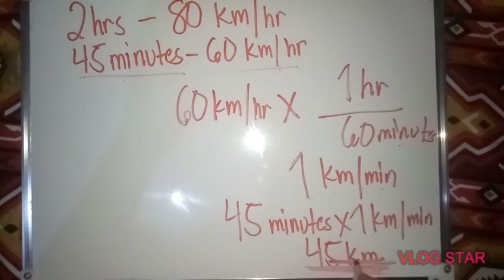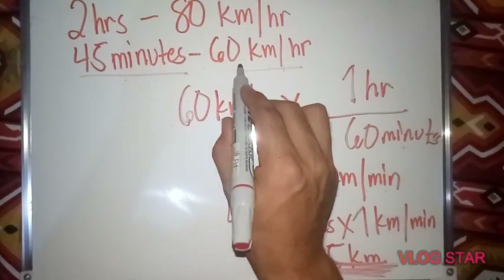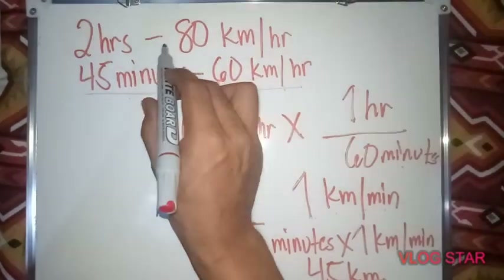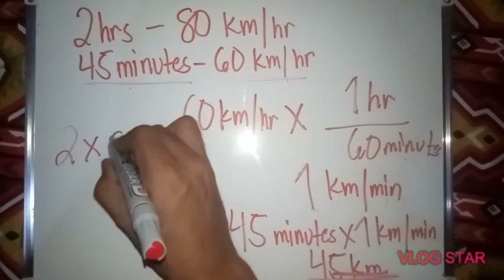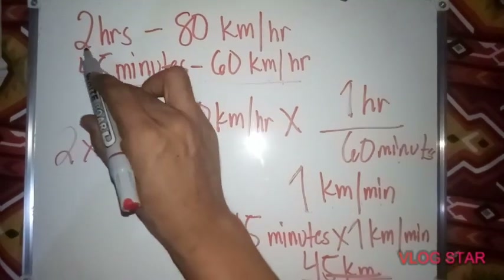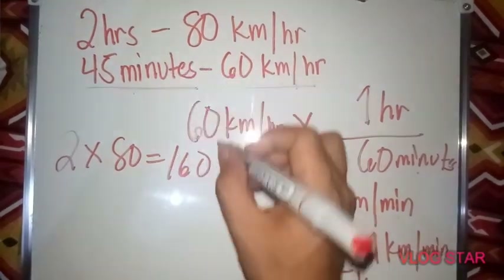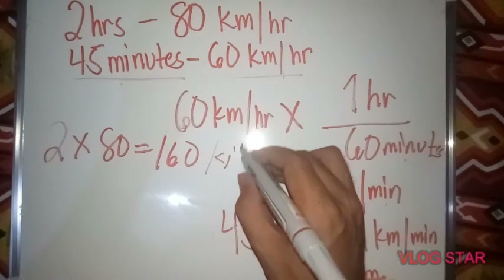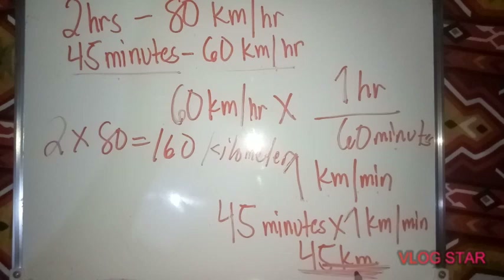He traveled 45 km for 45 minutes at the rate of 60 km per hour. Now for the car: 2 hours times 80 km per hour equals 160 km. So he traveled 160 km by car and 45 km by bus.